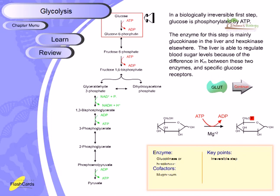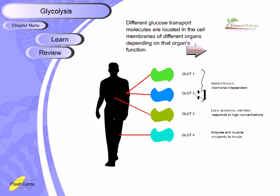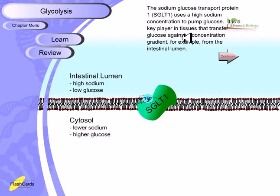The liver is able to regulate blood sugar levels because of differences in Km between these two enzymes and specific glucose receptors called GLUTs. Different glucose transport molecules are located in cell membranes of different organs depending on function. GLUT1 and GLUT3 are found in normal tissues and are hormone-independent. GLUT2 is present in liver, pancreas, and intestine and responds to high glucose concentrations. GLUT4 is found in adipose and muscle tissues and responds to insulin.